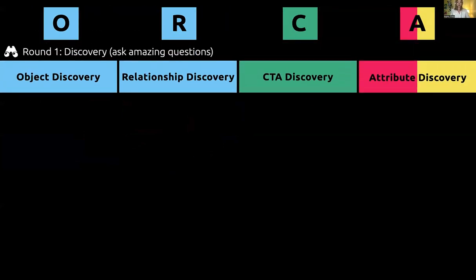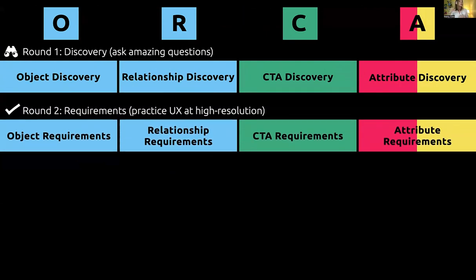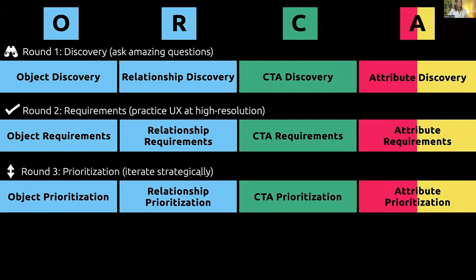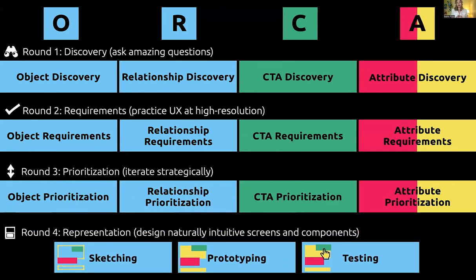The ORCA process is iterative — we tackle those questions in rounds. In the discovery round, we have tools that help us ask really great questions. We tackle O, R, C, and A in discovery to feel out the level of complexity. Then we go into requirements — what I call practicing UX at high resolution — which is the advanced stuff in the masterclass. Then prioritization, where we can prioritize from a user perspective and a roadmap perspective. Finally, we bring it all together in sketching, prototyping, and testing.